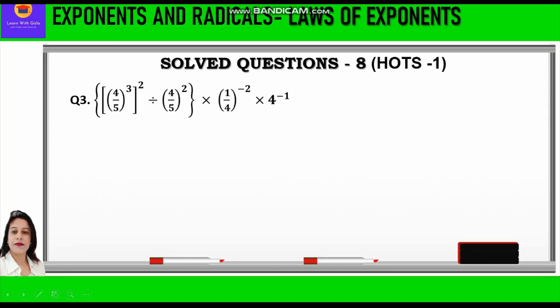Question 3: inside a curly bracket we have 4 by 5 raised to power 3, whole raised to power 2, divided by 4 by 5 whole raised to power 2, into 1 by 4 raised to power minus 2, into 4 raised to power minus 1. For the first bracket, we apply the power of power law: x raised to power a, whole raised to power b, equals x raised to power ab — multiply both powers. We also apply the negative exponent law, converting to positive by reciprocating the base.